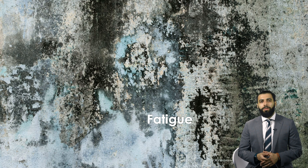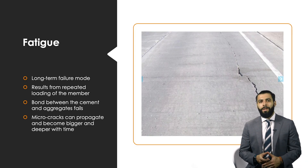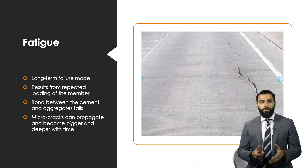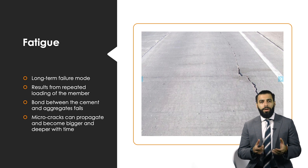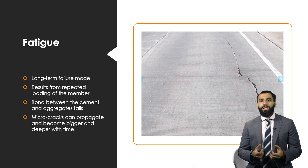Fatigue for a concrete member is a result of long-term failure — constant loading and unloading of a structure. For instance, if you have a concrete pavement with traffic, vehicles continually move onto that concrete member. In the long run the pavement will crack due to fatigue. At that point the bond between your aggregates and the cement fails, and the cracks usually get bigger with time, which can be a structural concern.